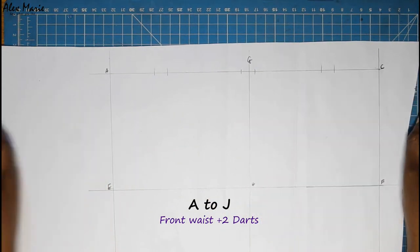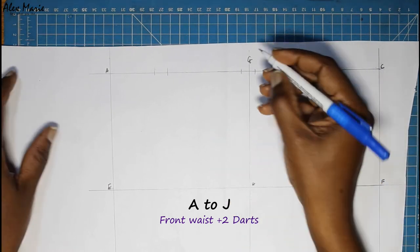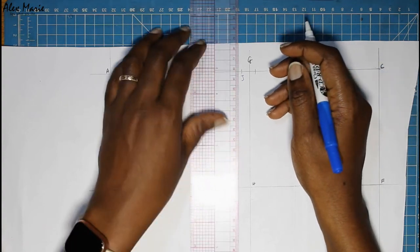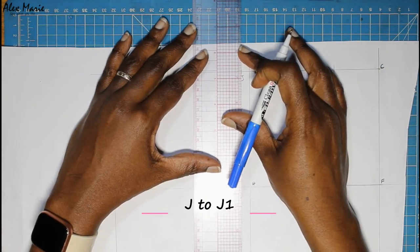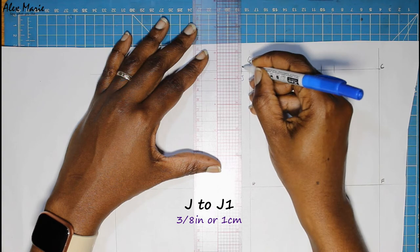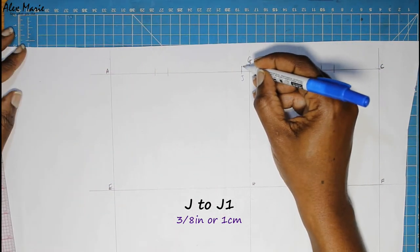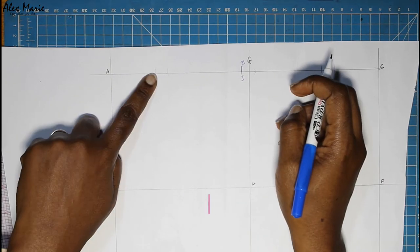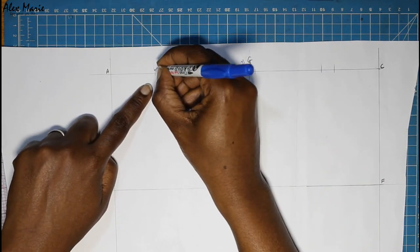You put your front waist plus your dart measurements, but this time it is two darts. So instead of one inch for one dart, I added two inches for two darts. All this is in the worksheet that is also linked below. So that's A to J, and of course J1 to put the shaping.